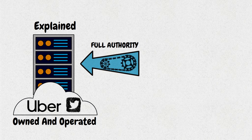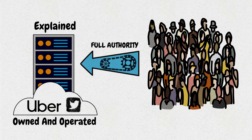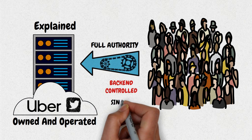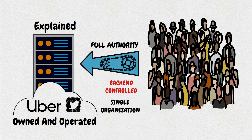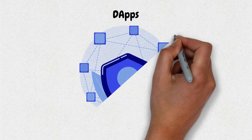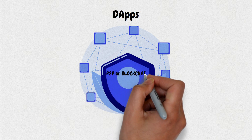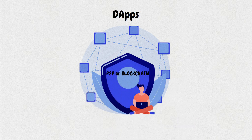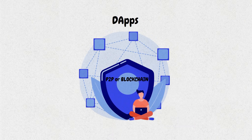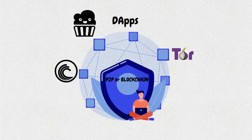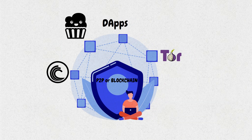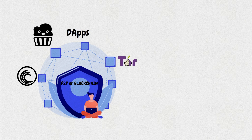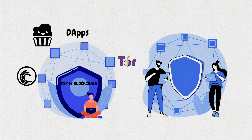There may be multiple users on one side, but the back end is controlled by a single organization. dApps can run on a peer-to-peer network or a blockchain network. For example, BitTorrent, Tor, and Popcorn Time are applications that run on computers that are part of a p2p network, whereby multiple participants are consuming content, feeding or seeding content, or simultaneously performing both functions.